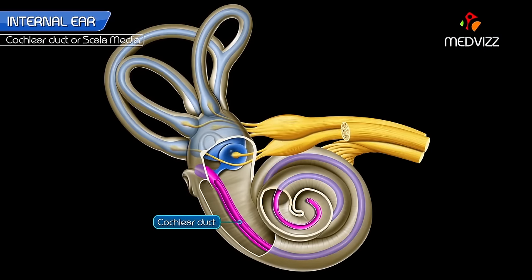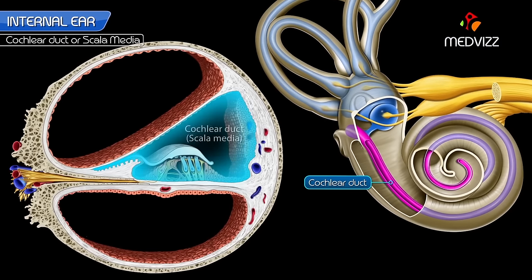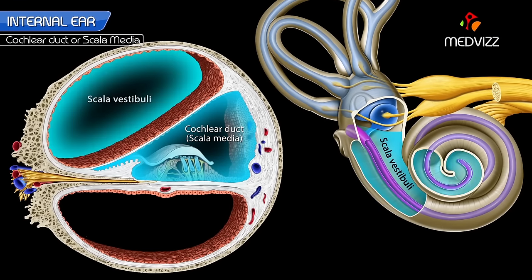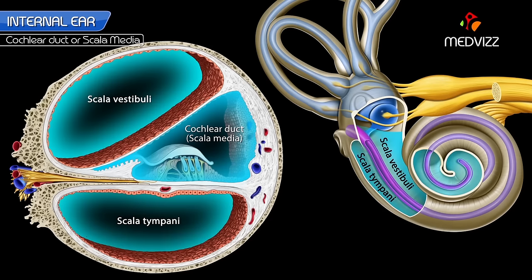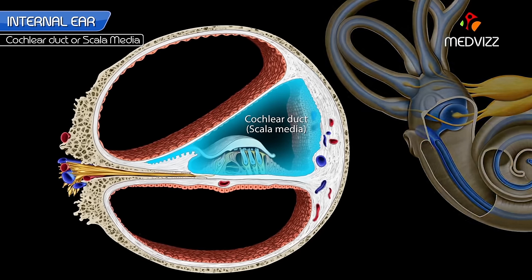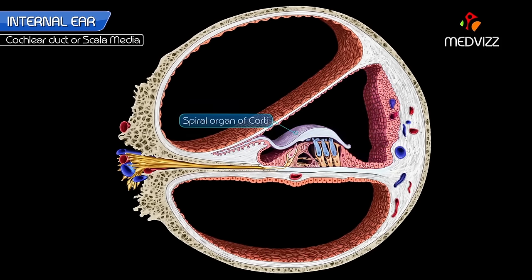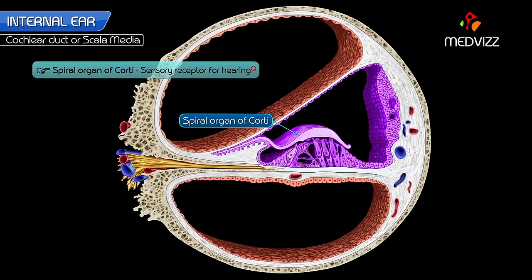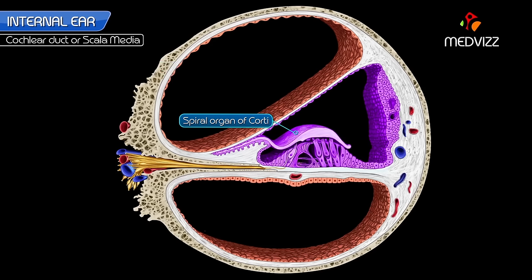The cochlear duct is the spiral anterior part of the membranous labyrinth, with two and three-quarter turns. It lies in the middle portion of the cochlear canal, between the scala vestibuli and scala tympani. The cochlear duct contains the spiral organ of Corti, which is the sensory receptor for hearing. The structure of the cochlear duct is best studied in a cross-section of the cochlear canal.